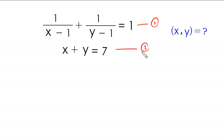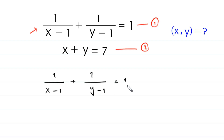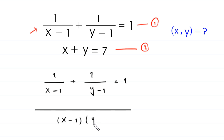We start from Equation 1: 1 over (x minus 1) plus 1 over (y minus 1) equals 1. We take the LCM of the denominators. The LCM is (x minus 1) times (y minus 1). Dividing by (x minus 1) gives (y minus 1), and dividing by (y minus 1) gives (x minus 1), so we get (y minus 1) plus (x minus 1) equals 1.